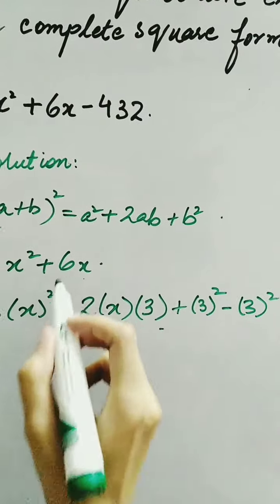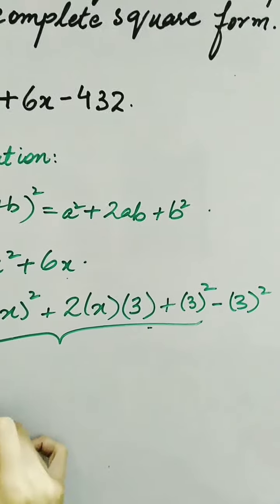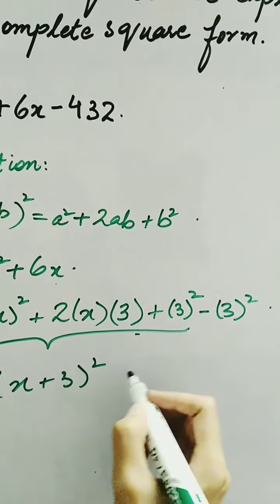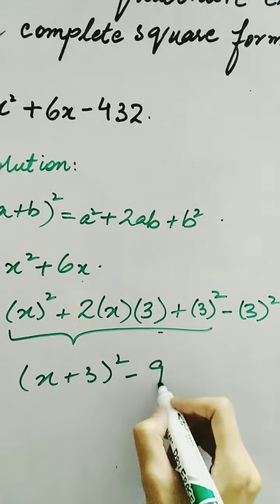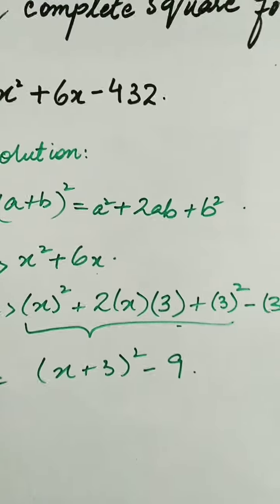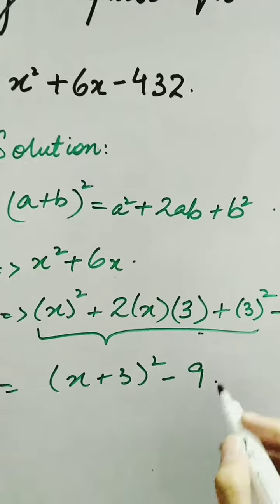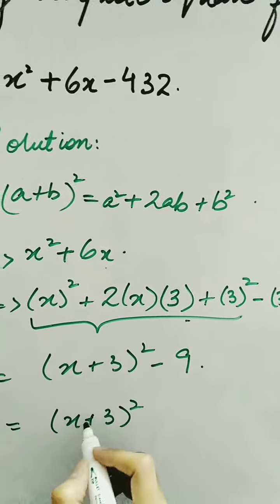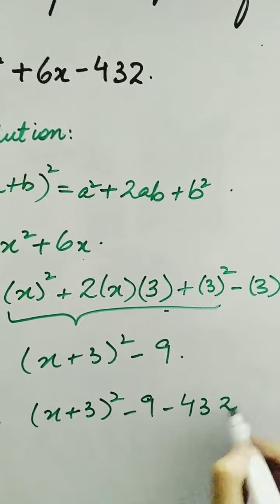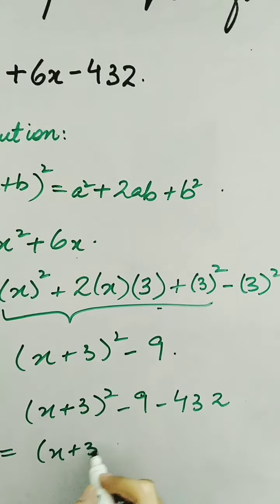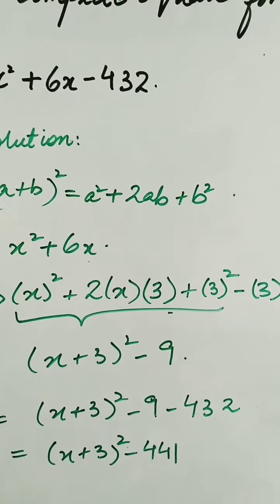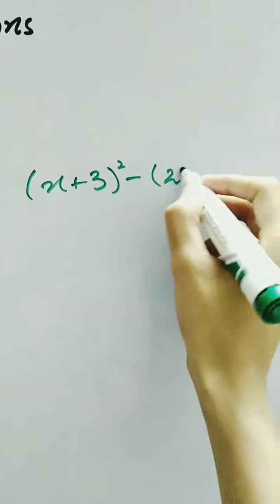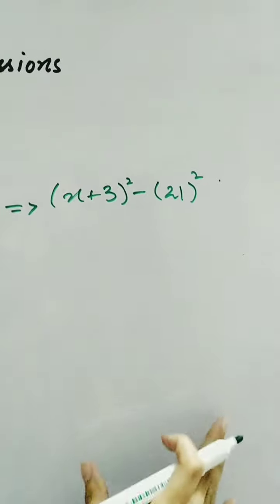Now these terms are the equivalent of x squared plus 6x. We can write these three terms in formula form as (x plus 3) whole square minus 9, where x is a and 3 is b. So the value of x squared plus 6x equals (x plus 3) whole square minus 9. Substituting into the given expression x squared plus 6x minus 432, we write it as (x plus 3) whole square minus 9 minus 432. Further solving, we have (x plus 3) whole square minus 441. And since 441 is the square of 21, we can write (x plus 3) whole square minus 21 squared.